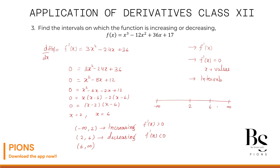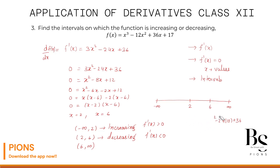For the interval (6, +∞), choose x = 10 — easy to calculate. f'(10) = 3(100) - 24(10) + 36 = 300 - 240 + 36, which is clearly positive. So the function is increasing on (6, +∞). f'(x) > 0 in this interval.